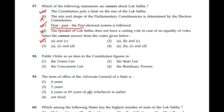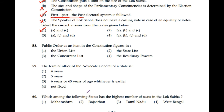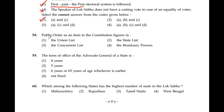Question number 58: Public order as an item in the constitution figures in the union list, state list, concurrent list, or residuary powers? Correct option is 2: the state list.